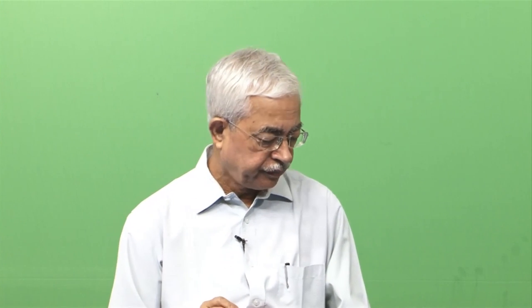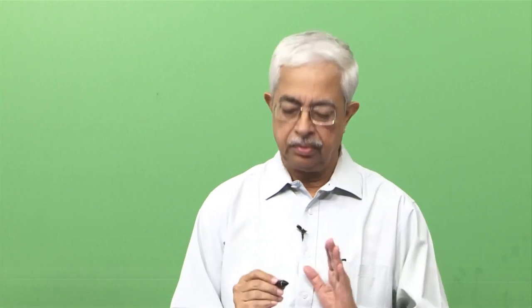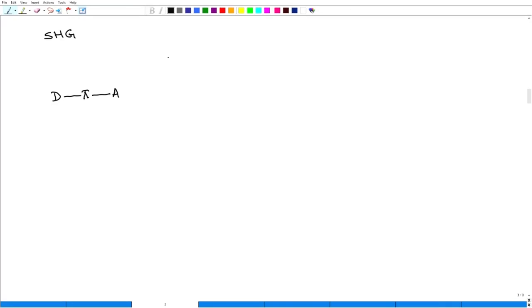My request to you will be to study these things in detail. I will now discuss one very important use of second order optical non-linearity — that is SHG. SHG stands for second harmonic generation.